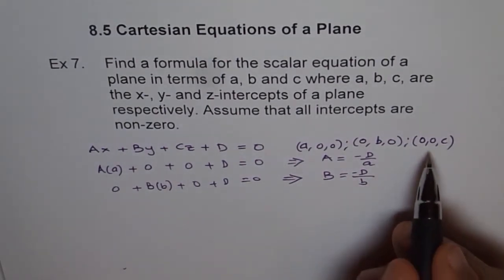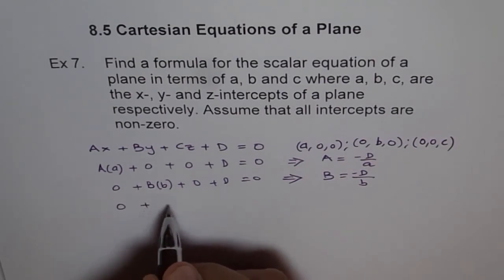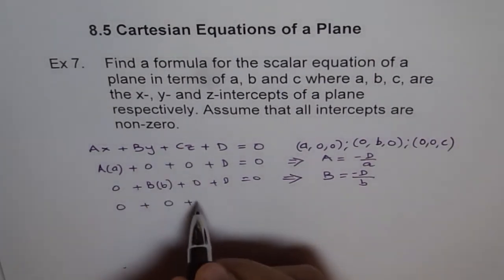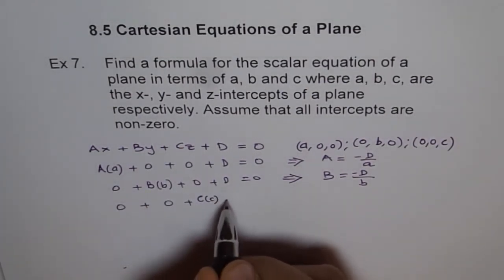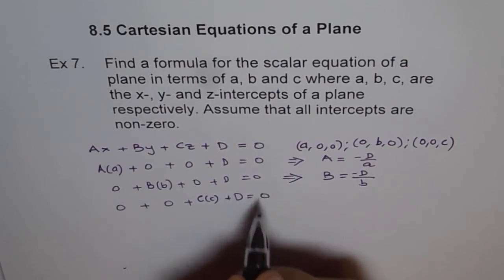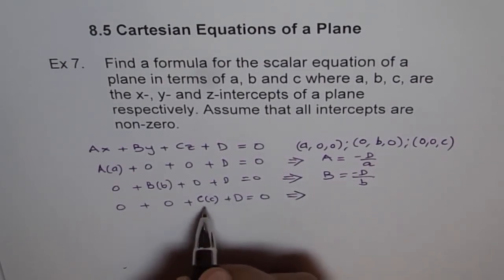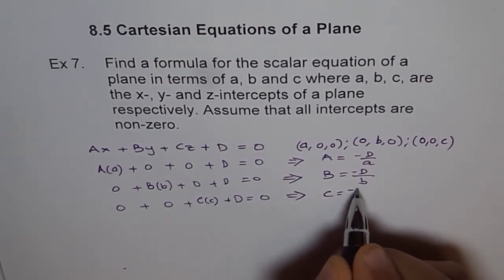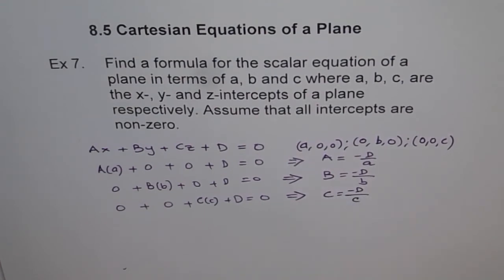Similarly, we will put the third intercept point in our equation and we get this 0, this 0 and here we get C times small c plus D equals to 0 and this implies C equals to minus D over C.